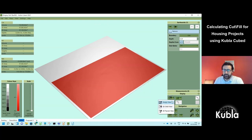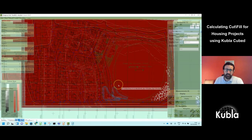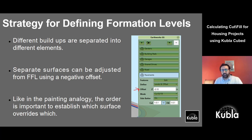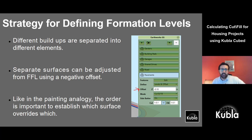Now we're moving to the proposed levels, which is more complicated. I'll return to the slides. There are two approaches in Kubla Cubed for adjusting from finish levels down to formation or subgrade: the offset method, where you break the site into elements and adjust them using a Z offset; and doing everything in one surface with different reduce elements. We advise the offset method — it creates nicer models and is easier to manage.